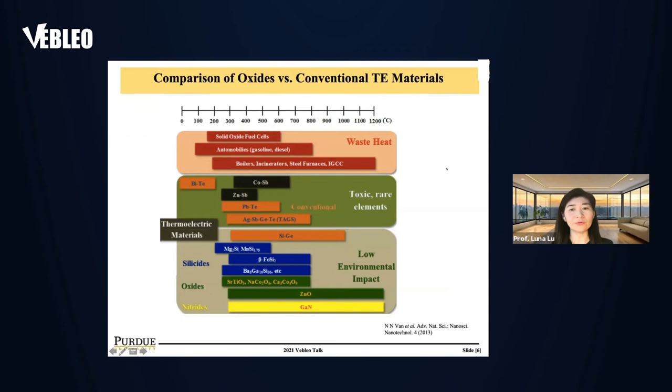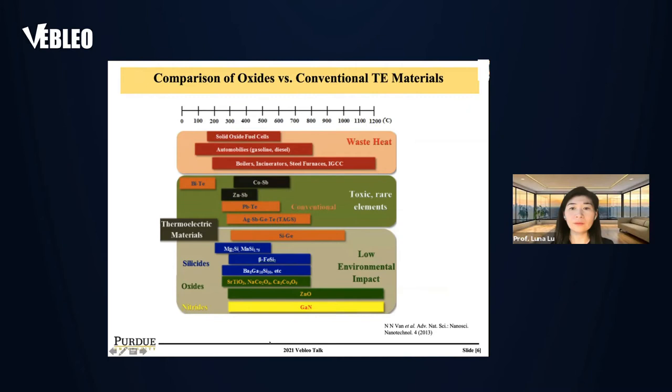Comparing oxide with conventional thermoelectric materials, there are many advantages: low environmental cost, low environmental impact, and non-toxic materials. Importantly, as shown here, oxides and nitrides have very high thermal stability up to 1200°C, which is precisely where most industrial process waste heat is concentrated.